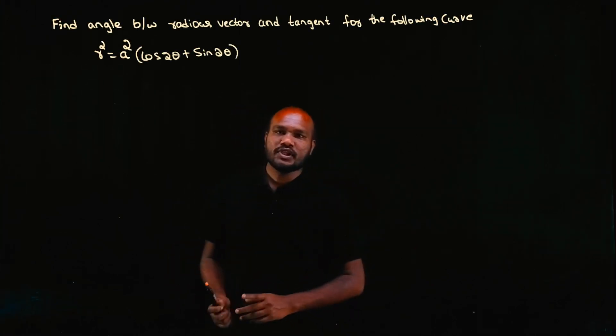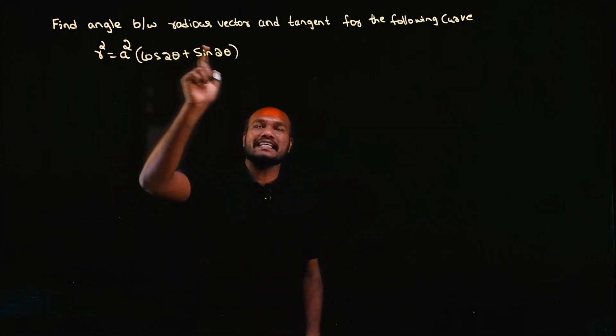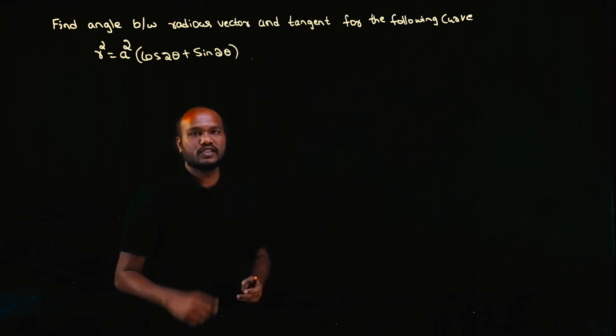Hey guys, welcome to another video. In this video series we are solving 2021 Scheme M1 questions from the first module on polar curves. Make sure to subscribe for more videos like this. In the question, we have to find the angle between radius vector and tangent for the given curve.